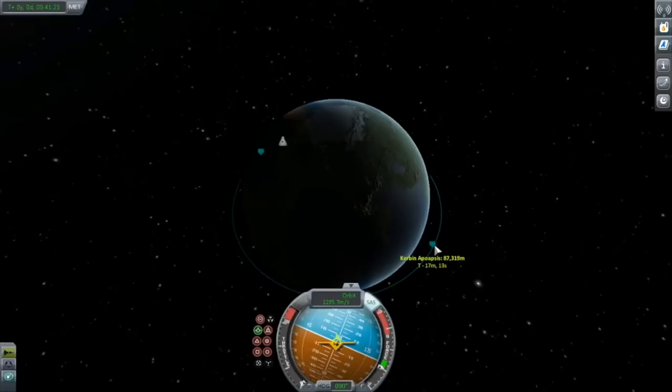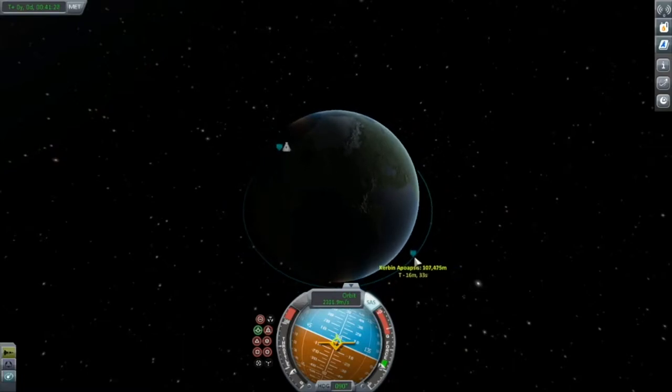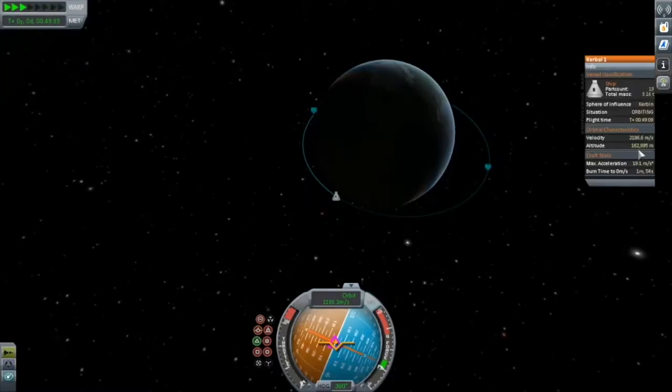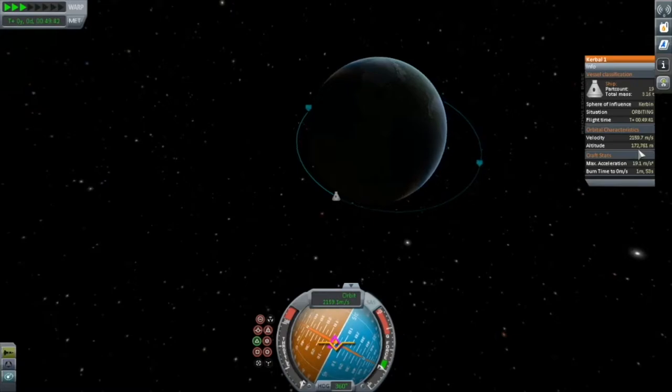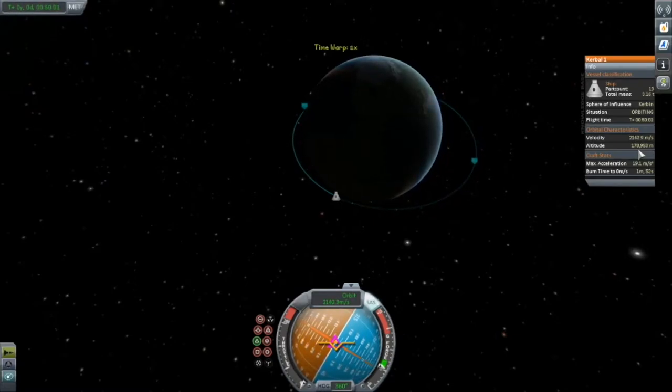I think of orbital mechanics in terms of energy. I first talked about this when developing the vis-viva equations. Namely that the mechanical energy of an object in orbit is just a function of two things: its altitude and its speed. In addition, the mechanical energy of a stable orbit is a constant. That's why when you gain altitude, you lose speed and vice versa.